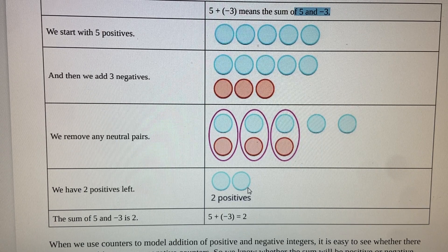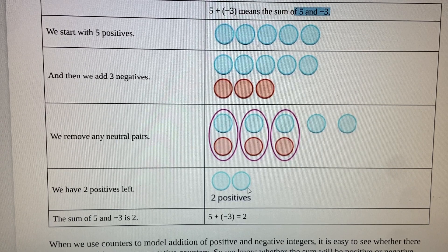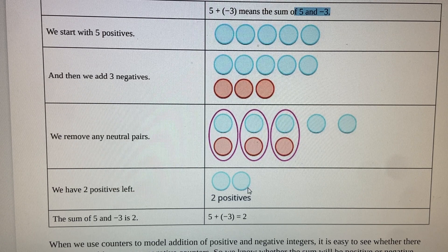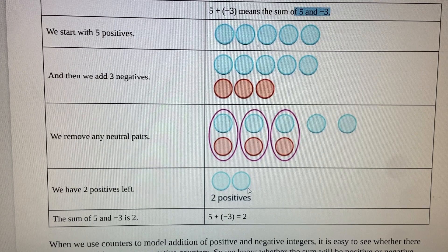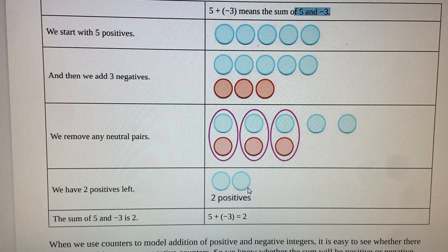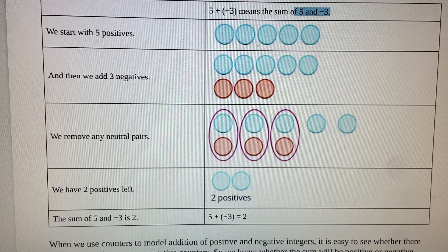Some of them cancel out and you're left with two positives. So there's nothing wrong in this model and is actually important. Counting by ones, forming neutral pairs and cancelling each other out are the core ideas here.